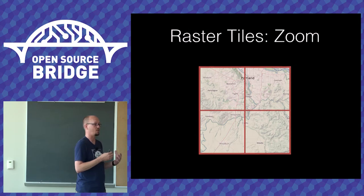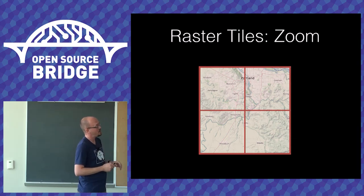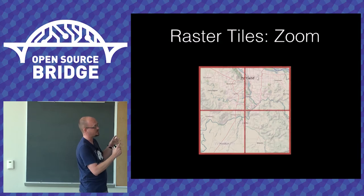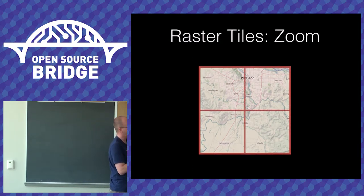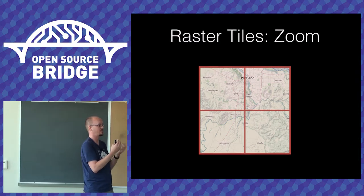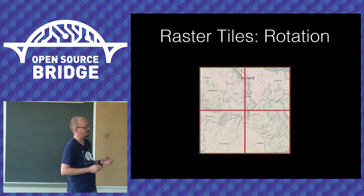At a certain threshold, the image subdivides into four more tiles — what we call the tile pyramid. You start with the whole world in one tile, zoom in and it becomes four higher-resolution images, and so on. This has visual limitations: as you cross zoom thresholds, things are drastic — labels weren't there before, then suddenly get blown up in size, and you're essentially making a snap decision to switch the scale of the map.